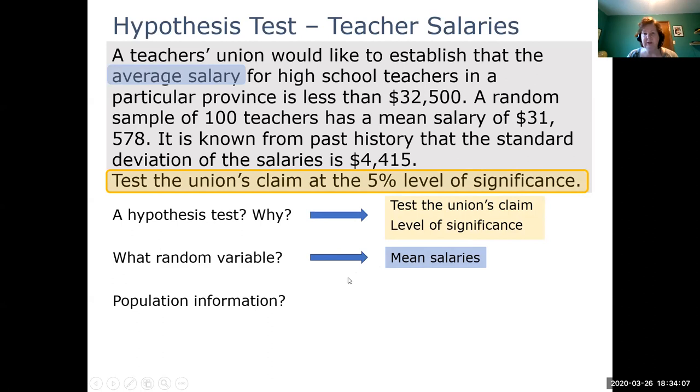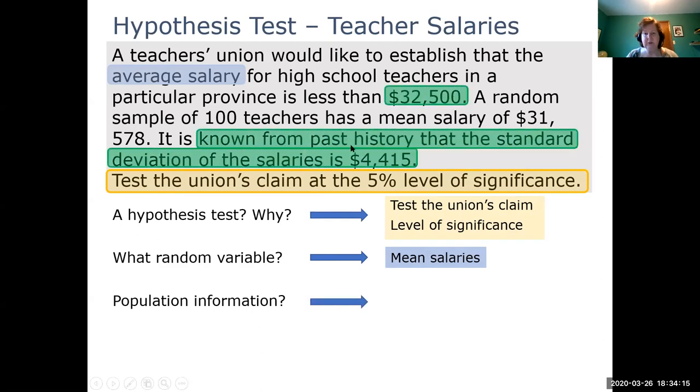We need to look for population information. Population information is what is the status quo, what's currently accepted. Let's find the status quo. From past history, the standard deviation was $4,415. The union is trying to test that the actual salary is less than what's currently accepted, $32,500. So there's our population center mu and our population spread sigma.